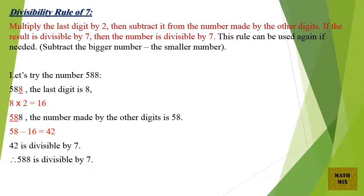Divisibility Rule of Number 7. Multiply the last digit by 2, then subtract it from the number made by the other digits. If the result is divisible by 7, then the number is divisible by 7. This rule can be used again if needed. Subtract the bigger number minus the smaller number.